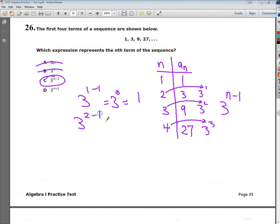I'm going to try 2 now. Plug in a 2 right here. 2 minus 1 is 3 to the first power. 3 to the first power is 3. Plugged in a 2. Got a 3, just like I'm supposed to. And it tends to work all the way down. So I know that that's the correct answer.